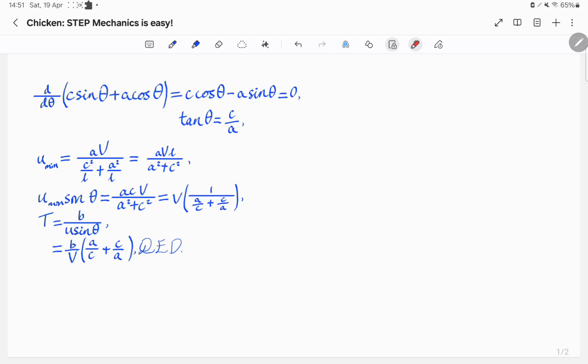Again, from the diagram above, the time taken for the chicken to cross the road is equal to B, the width of the road, divided by U sine theta, which is the speed of the chicken in the direction going across the road. This is equal to B over V of A over C plus C over A, as required.